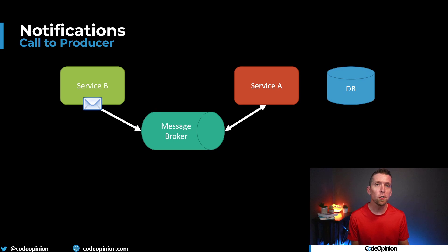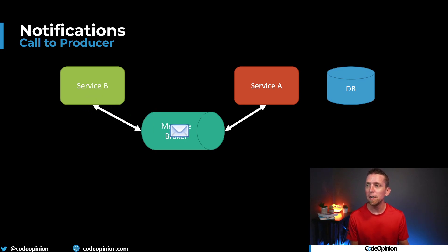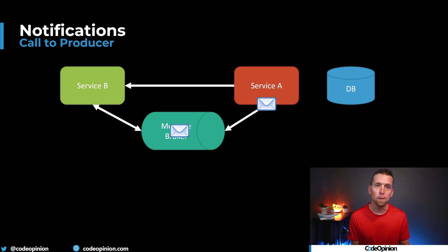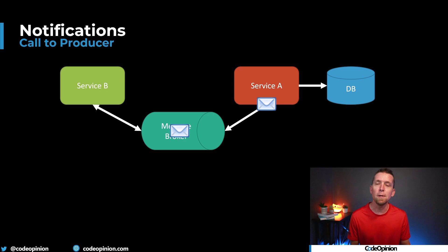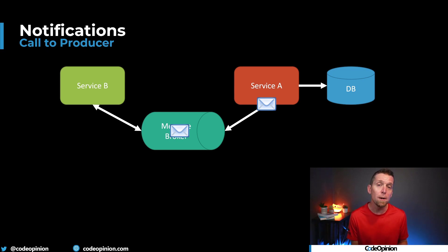Another solution to seeding a new service isn't really seeding it at all — it's doing it lazily. When talking about event carried state transfer, maybe it's just a delta change we're receiving. If Service A is brand new and we don't have any idea about what that entity is from a delta change, then we just call back to the producer — Service B. We make a synchronous call to it; it provides an API for getting the full value data of that entity. We persist that to our database. Then going forward, any delta change or event carried state transfer for that specific entity doesn't require a callback anymore — we can just update our local cache.